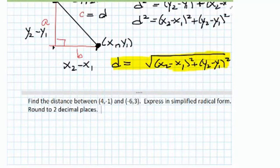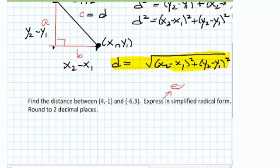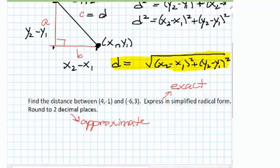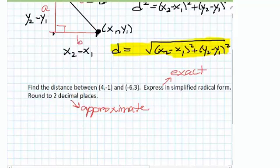The simplified radical form is the exact version of the solution, and when you round to two decimal places, this is really an approximation because there are a lot of numbers you can't represent as a terminating decimal. We just have to decide which point we're going to let be our x1 y1 and which will be our x2 y2. It doesn't matter, it'll turn out the same either way.